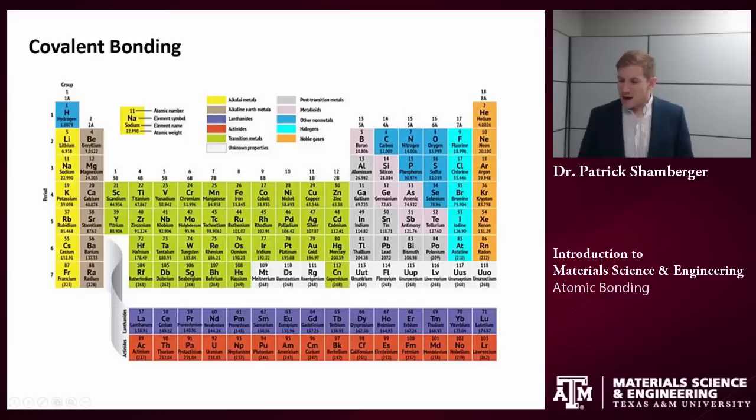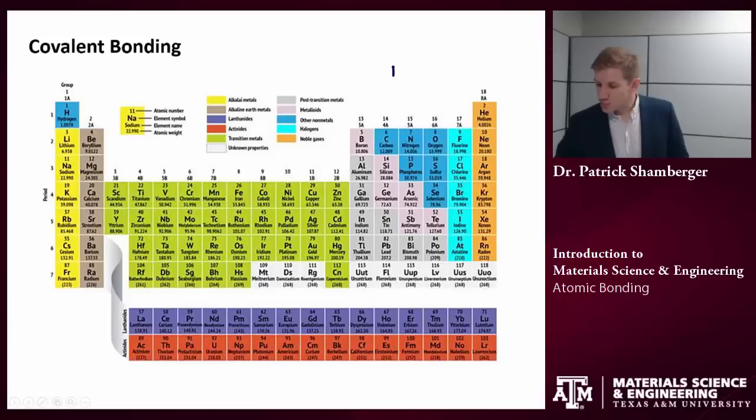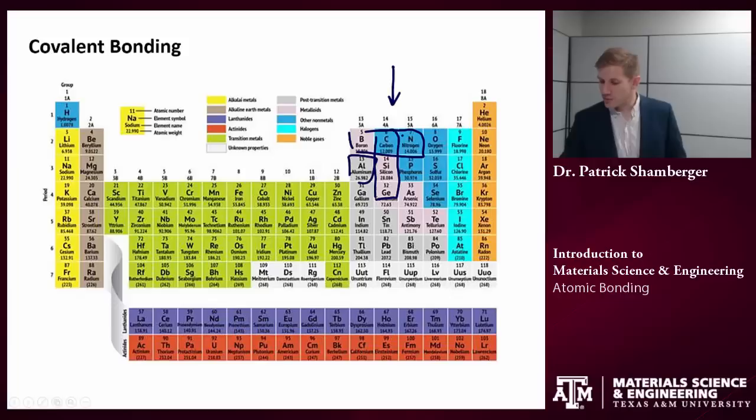Let's think about covalent bonding next. Covalent bonds are where atoms share electrons in order to achieve a full closed shell. These tend to be very strong bonds and very localized. The prototypical covalent solids are group four materials or some combination of surrounding materials — for example, boron nitride, carbon, aluminum nitride, and silicon carbide are all covalently bonded solids.